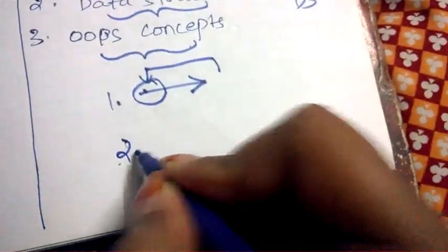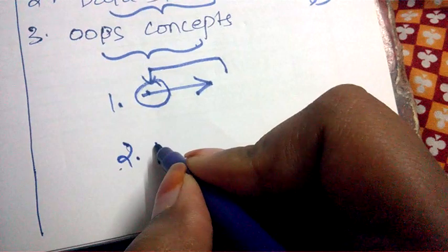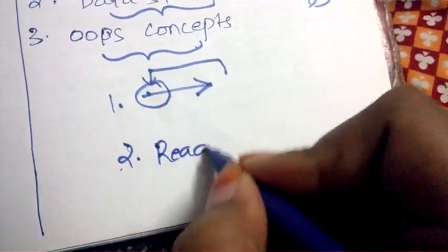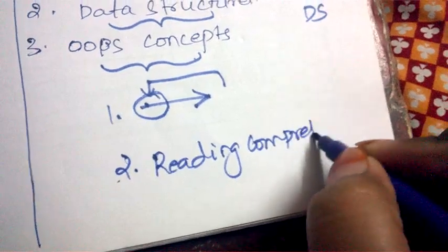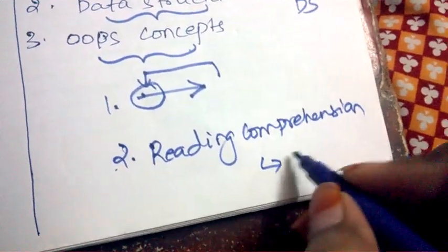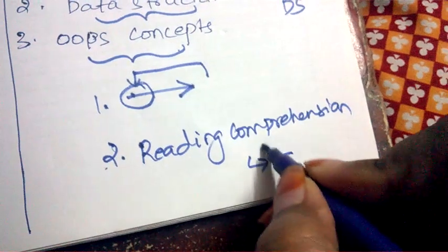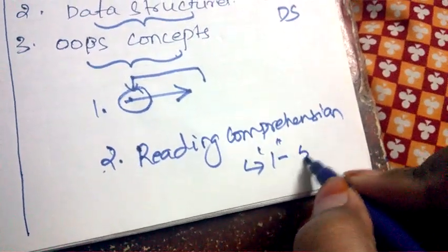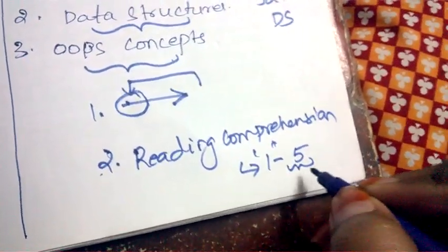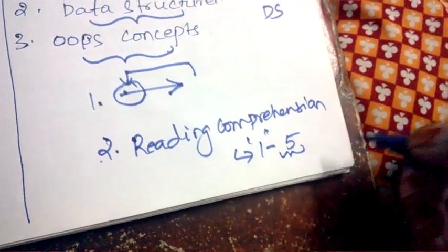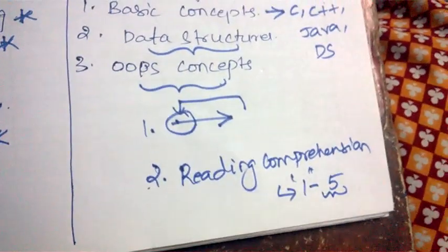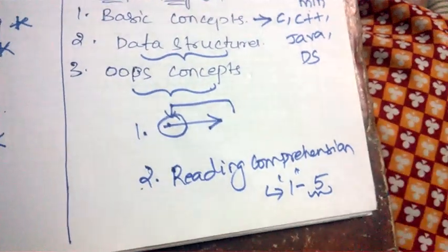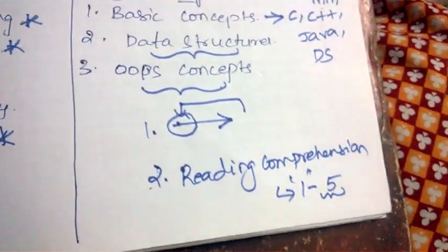And second tip is you need to concentrate on reading comprehension because it will be really helping you to clear the cutoff. Because one passage, like one paragraph, will be containing five questions which you can happily score within a limited time. So these are the two tips which I would like to give you for Mindtree written test.